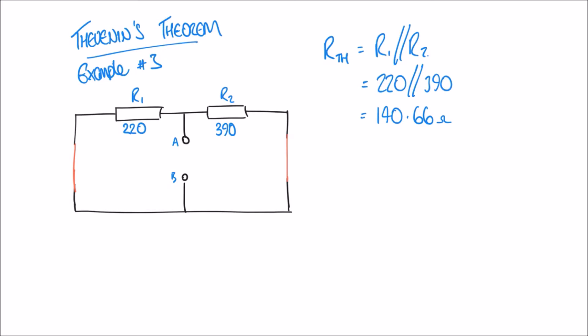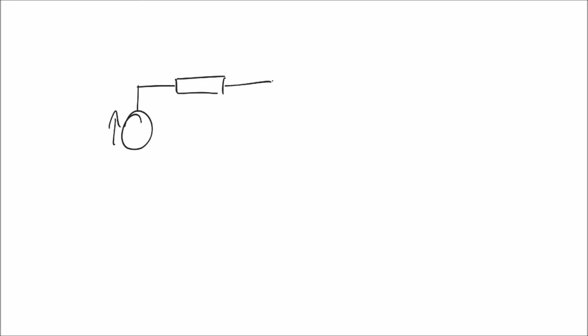Now I can draw the Thevenin equivalent circuit. It has one DC power supply and one resistor in series. The Thevenin voltage is 11.28 volts and the Thevenin resistance is 140.66 ohms. As I said in previous videos, this circuit is meant to be completely equivalent to the previous circuit — it'll give the same output voltage on the terminals, the same current across the terminals, and the same resistance or impedance on those terminals. The two circuits should be completely equivalent to one another.